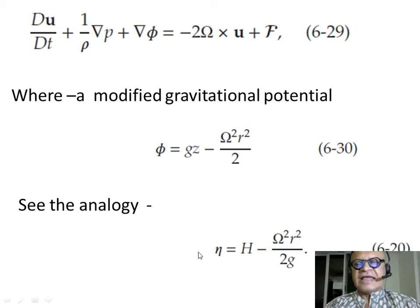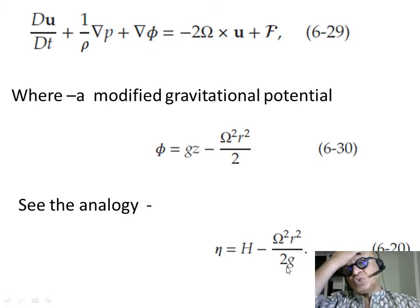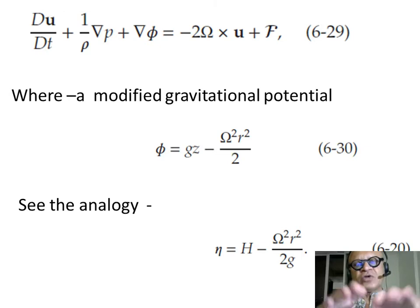You can see that the analogy to the reference parabolic surface we used is similar, h minus omega squared r squared over 2g. So, in the tank,